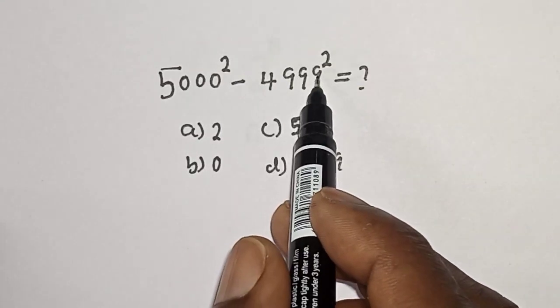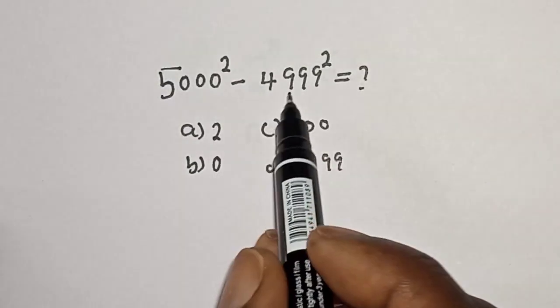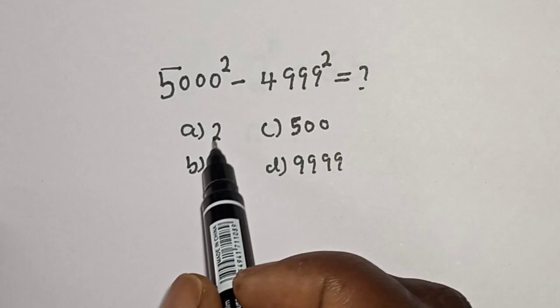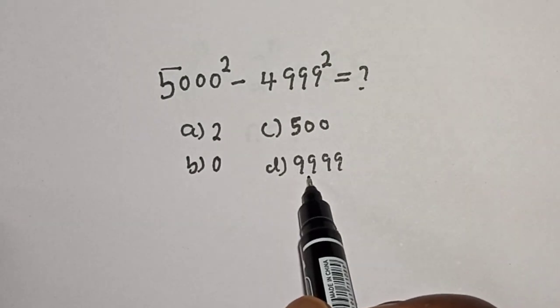5000 square minus 4999 square is equal to what? Hi everyone, welcome to my class. In this class we want to simplify this math problem with the following options: a is equal to 2, b is equal to 0, c is equal to 500, and d is equal to 9999.